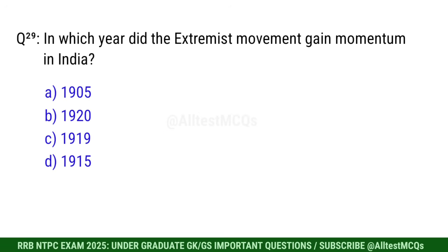Q29. In which year did the extremist movement gain momentum in India? Right option is A. 1905.